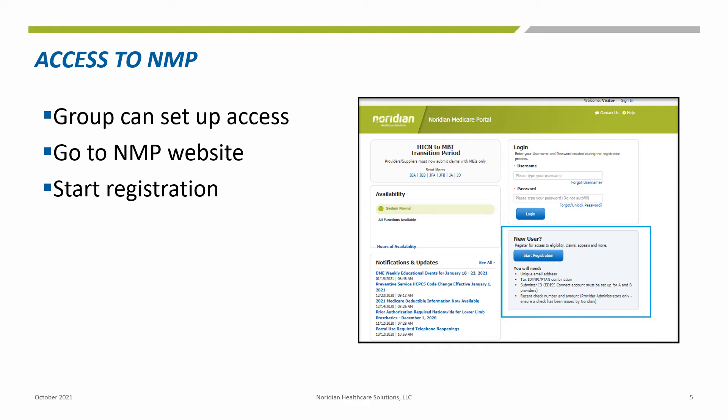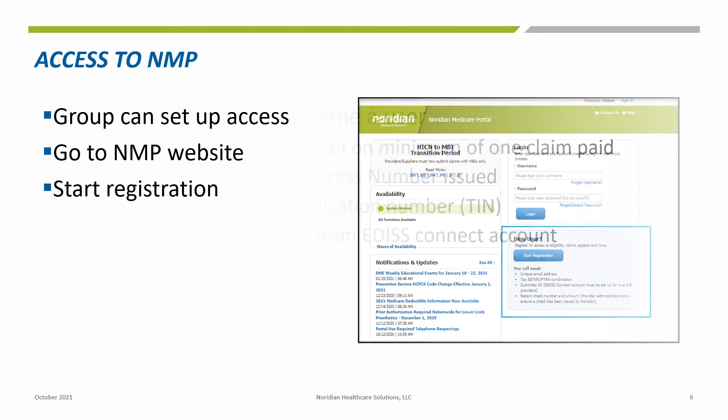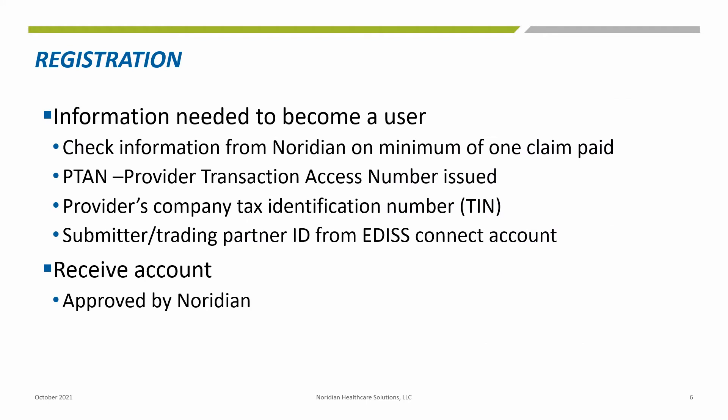To start, registration must be completed. To get your group access, head out to the NMP website and navigate to Start Registration. To register, you will need the following: at least one paid claim by Neridian, one PTAN issued, a tax ID, social security number, and an EDISS Connect ID. Complete your registration and submit. Neridian will notify you of access approval.